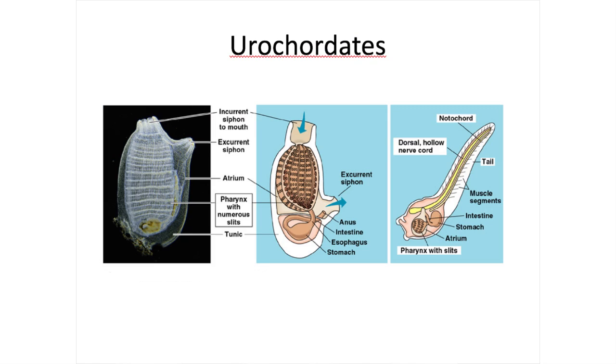The third hypothesis is one that appears to have the most support: a close relationship between chordates and urochordates, or sea squirts. The discovery that the larval forms exhibit a notochord, which is absorbed as the animal becomes sessile in adulthood, suggests based on this morphology that the two are more closely related.